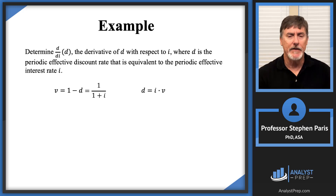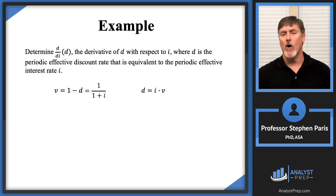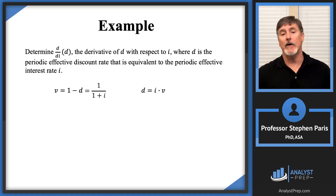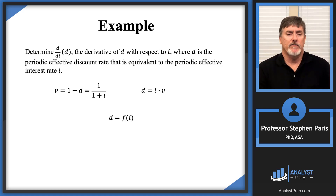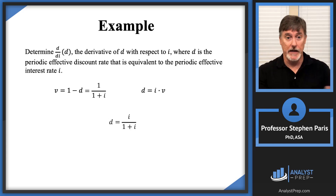The two key equations are: V equals one minus D, or equivalently one over one plus I, where D and I are equivalent rates; and D equals I times V. If I ever want to write D as an expression involving I, I start with D equals I times V and substitute one over one plus I for V, ending up with D equals I over one plus I.